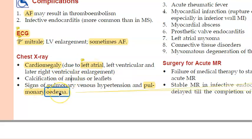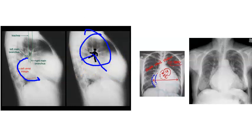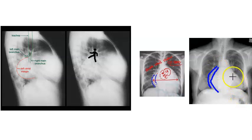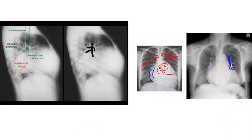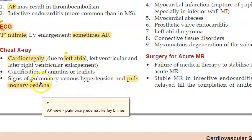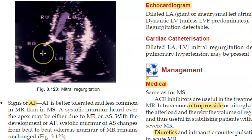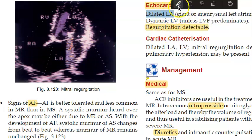On chest X-ray, you will see cardiomegaly due to left atrial enlargement, and pulmonary edema. Left atrial enlargement shows as a double border on the right heart border, a widened carina angle, and prominence of the left atrial appendage on the left border. On echocardiogram, the left atrium appears dilated and regurgitation is detectable.